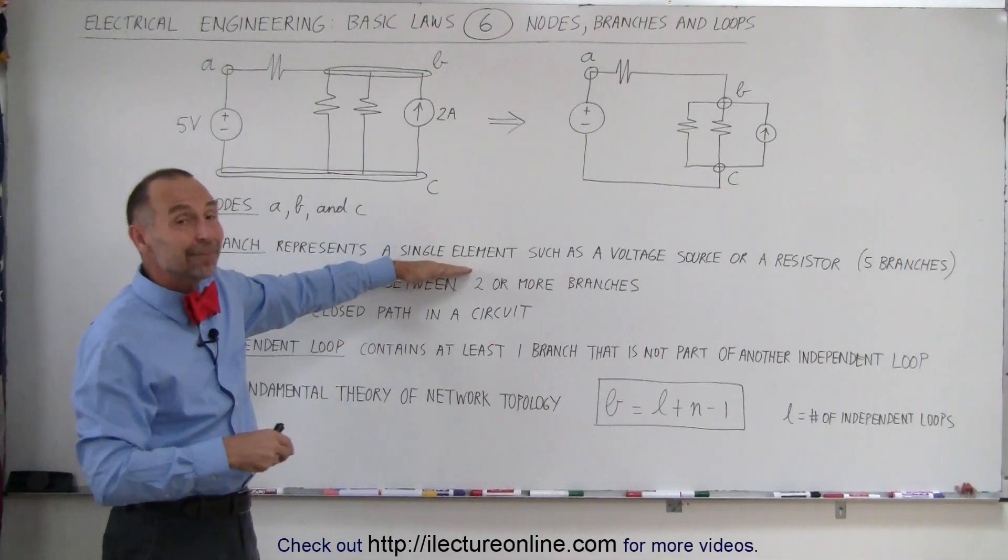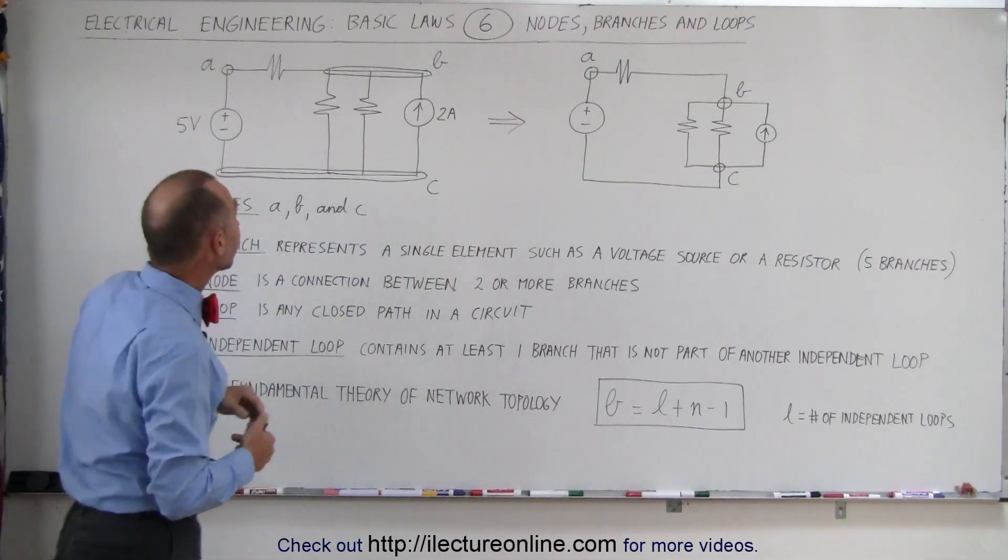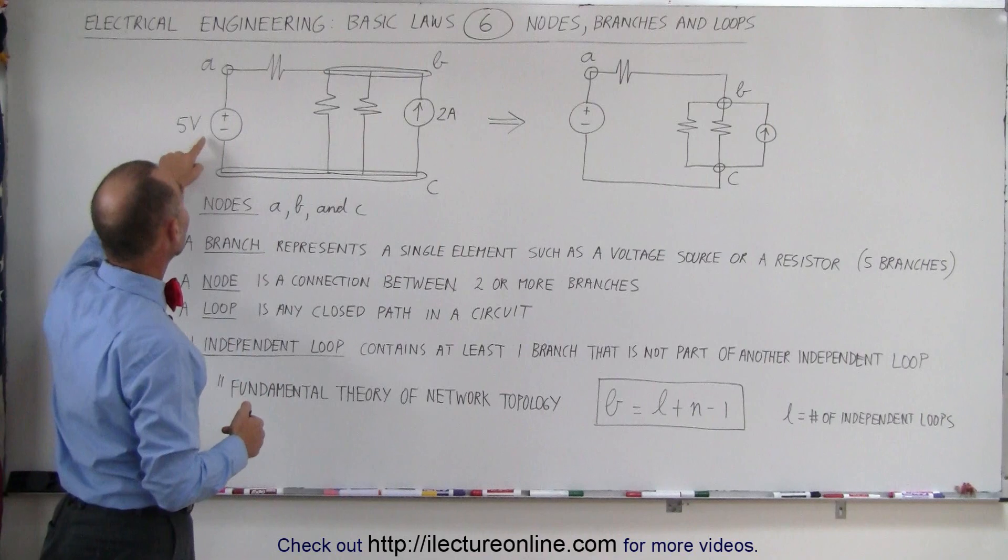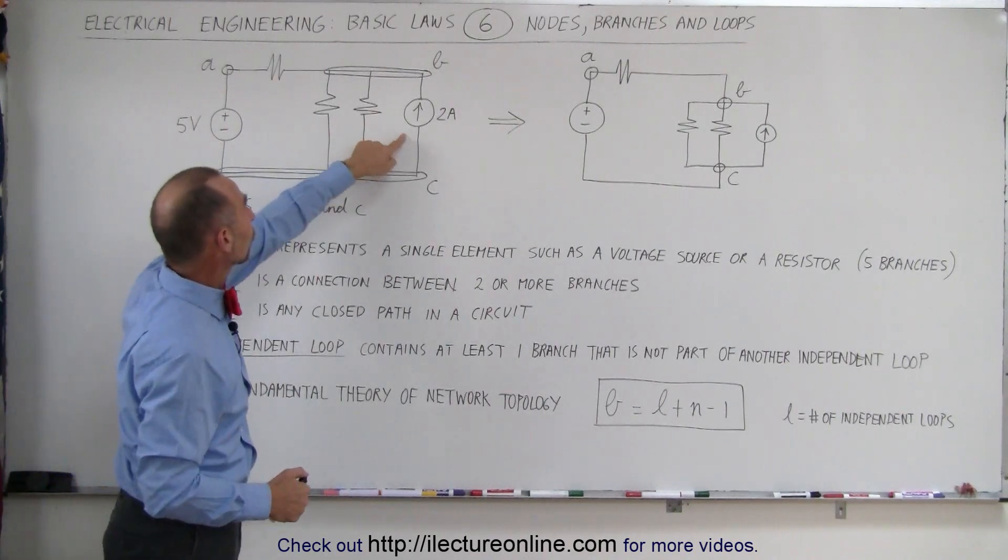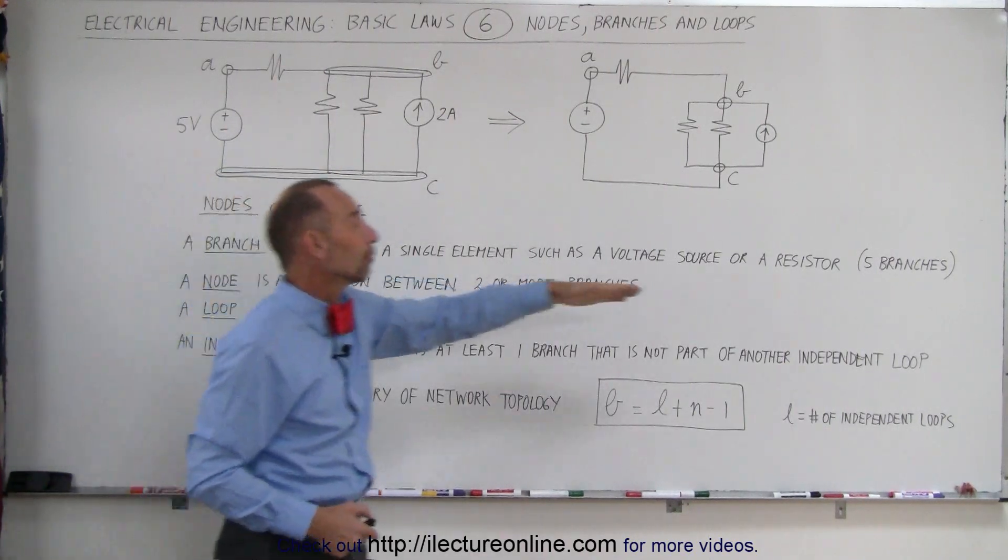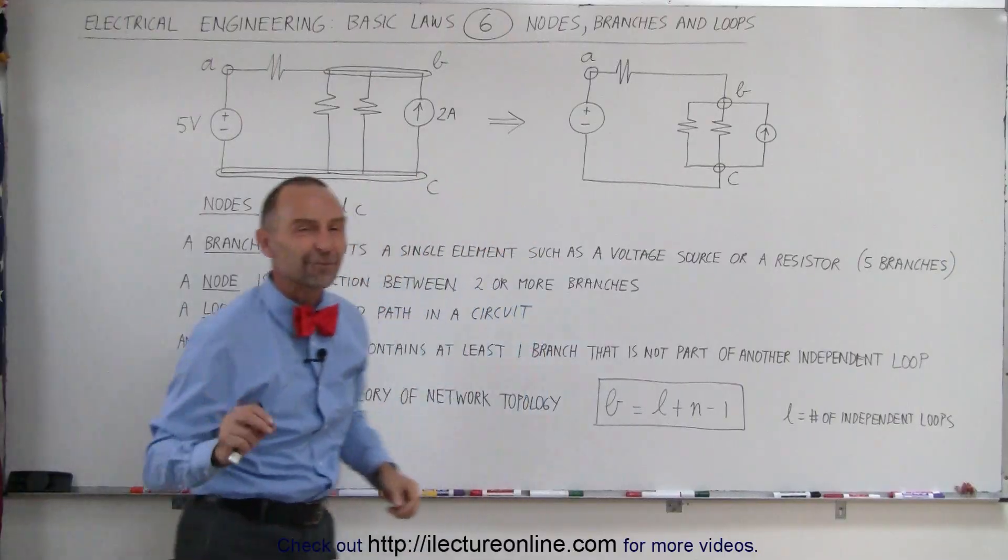A single element can be any of those items and in this particular case notice there's five of them. We have a voltage source, a current source, and three resistors, so therefore there are a total of five branches.